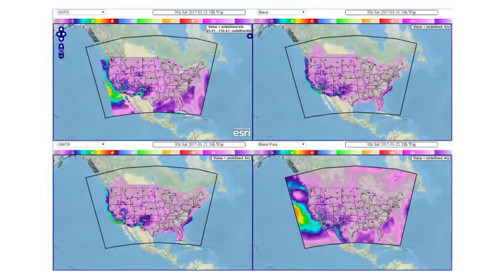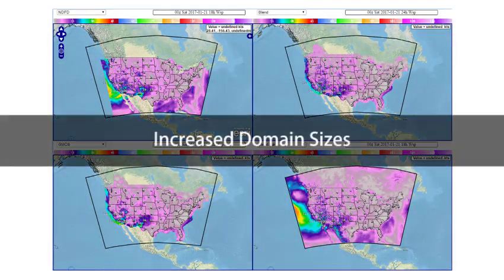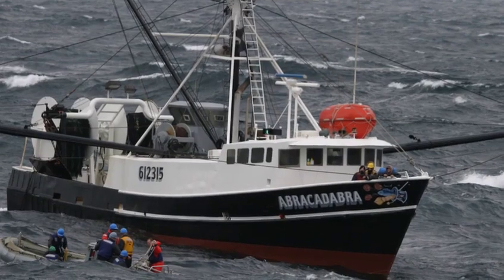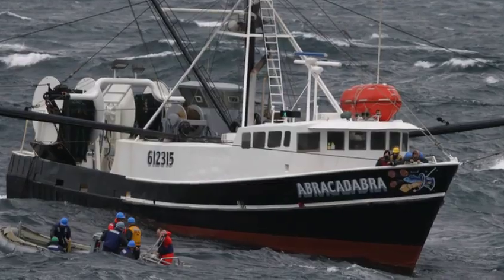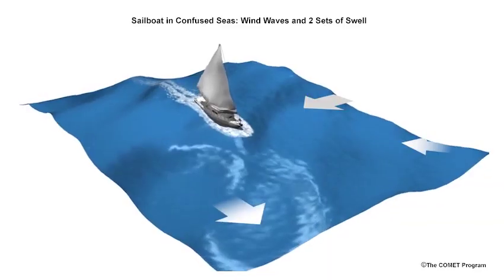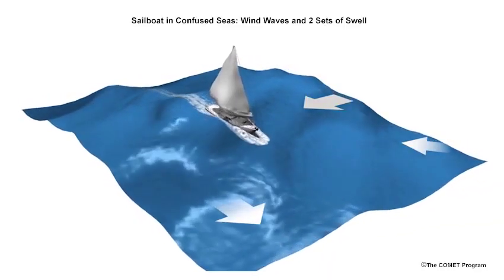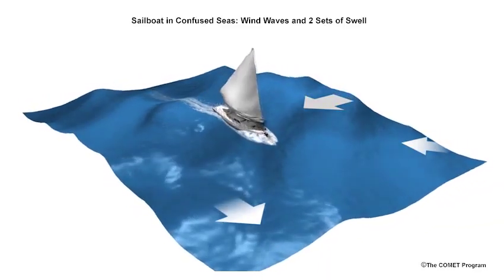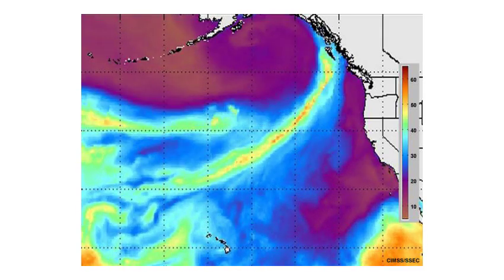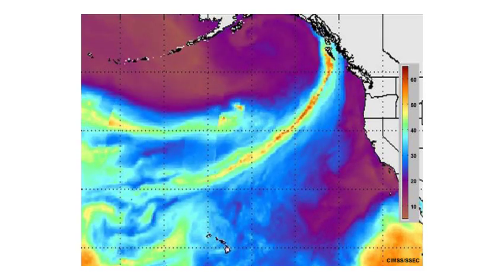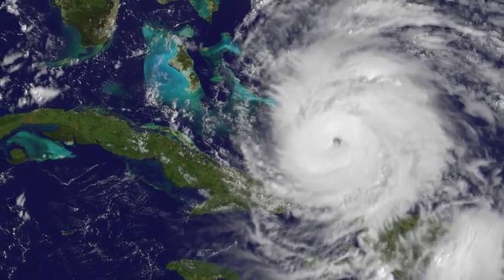Version 3 of the NBM expands the domains for CONUS, Alaska, and Hawaii. The larger offshore area benefits marine weather forecasters and provides wind inputs for the nearshore wave prediction model. West of CONUS, more upstream Pacific features can be seen. Parts of the Caribbean benefit from the larger CONUS domain, such as the Bahamas.